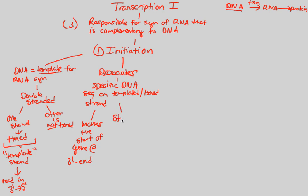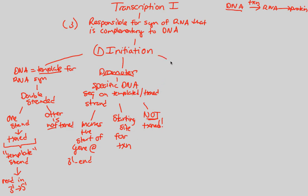More specifically, the promoter is the starting site for transcription. Importantly, the promoter itself is not transcribed — it's just a region that signals RNA polymerase to come over and start transcribing everything after this sequence. It's like a big shining light that tells RNA polymerase which gene to transcribe, while the gene itself lies just downstream.